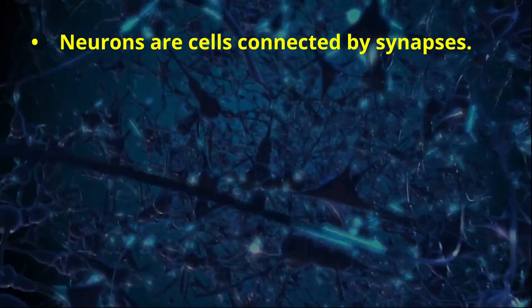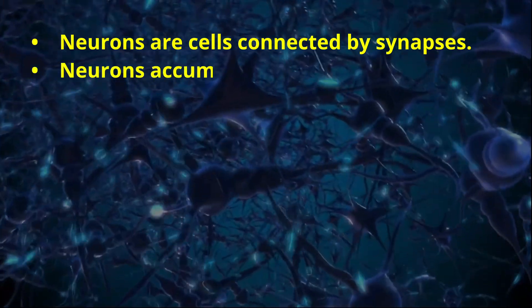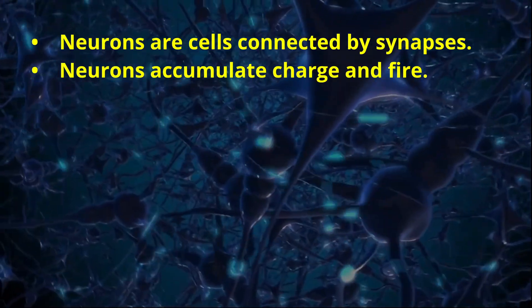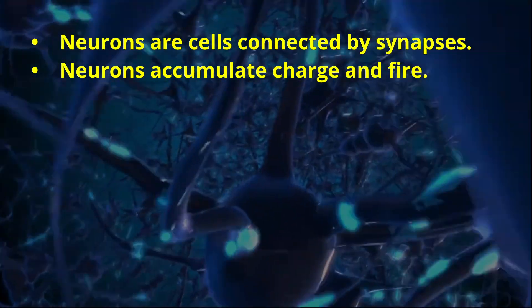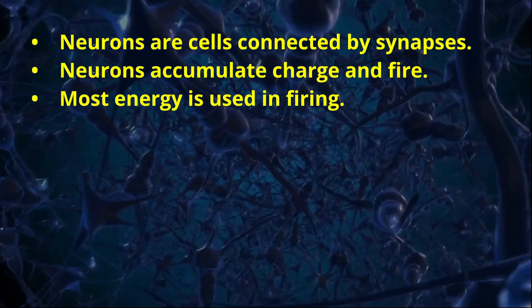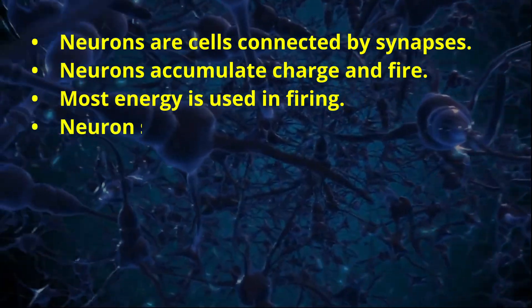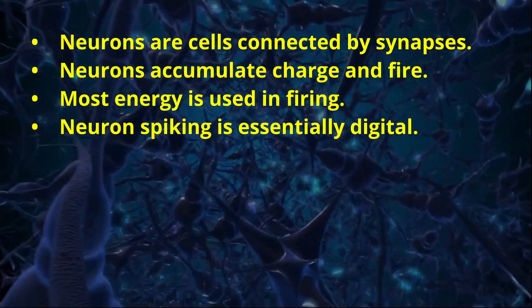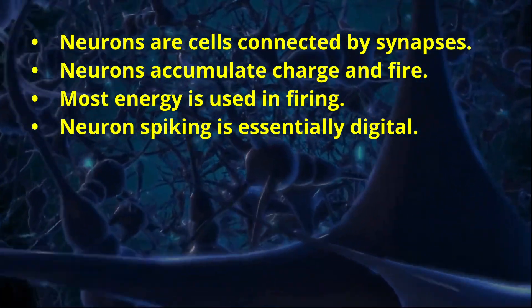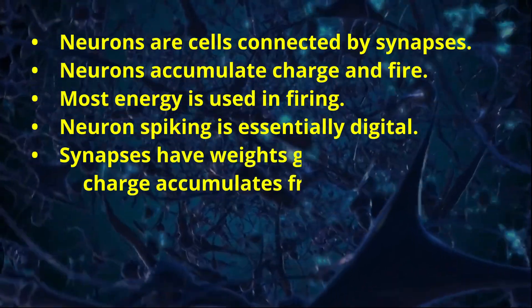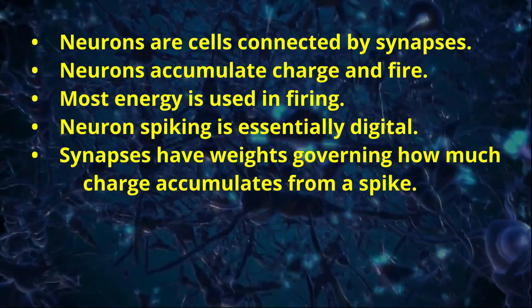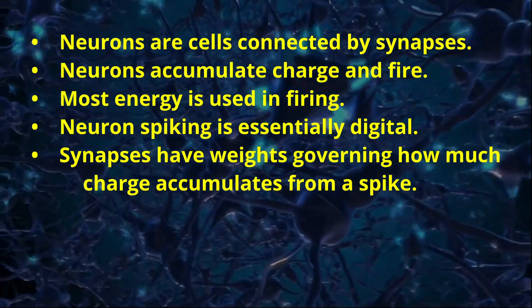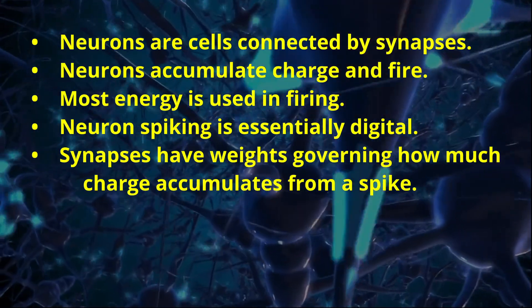Neurons are cells interconnected by synapses. Neurons accumulate charge and can fire when a threshold is reached. When they are not firing, they need almost no energy. All neural spikes appear to be about the same, implying that neurons are essentially digital. Synapses interconnecting neurons have a size or weight which impacts the firing of the target neuron.